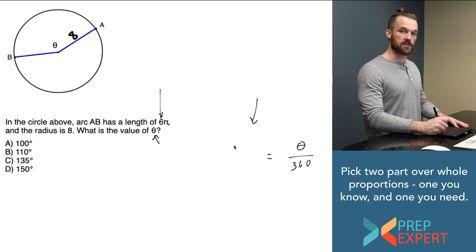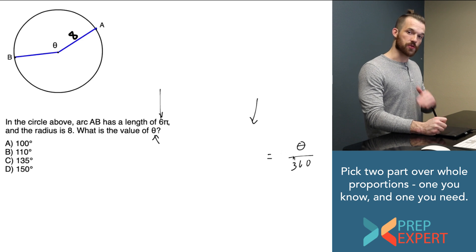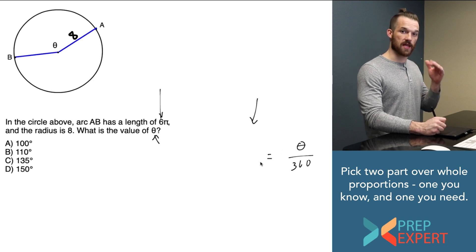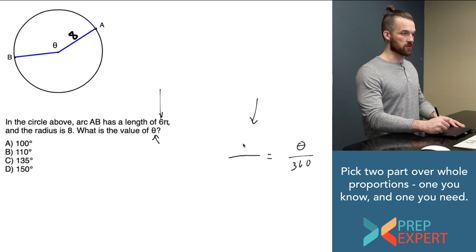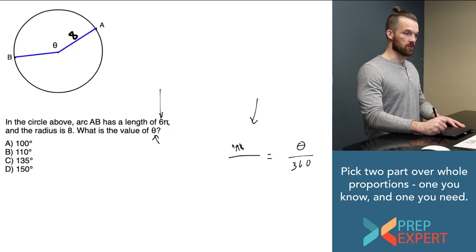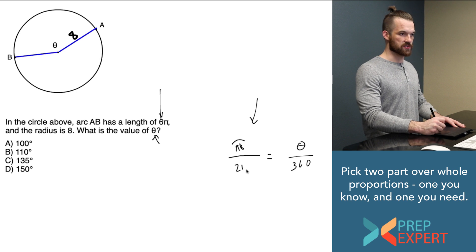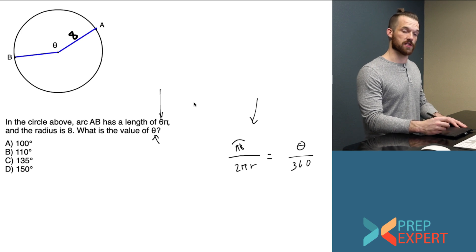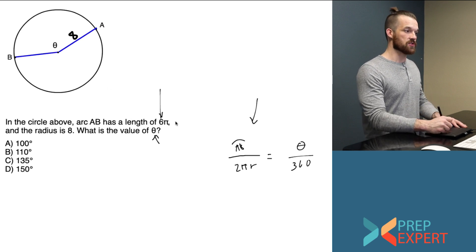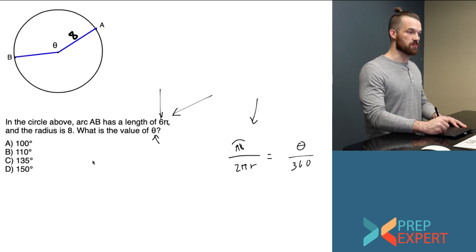I know that arc length is always proportional to circumference in the same ratio that theta will be proportional to 360. In other words, arc length AB over my circumference 2πr will be proportional to theta over 360. Now all I have to do is fill out this ratio and then solve for theta.